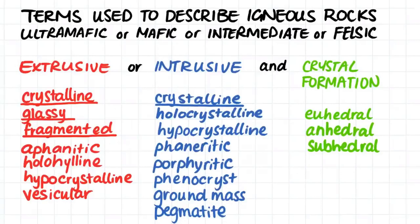In general, rocks can either be ultramafic, mafic, intermediate, or felsic, and then they can be classified as crystalline, glassy, or fragmented — which all depends on how the molten rock has cooled and solidified, whether it was an intrusive or extrusive igneous rock. If you haven't watched the videos on intrusive and extrusive volcanic activity, or the video that defines ultramafic, mafic, intermediate, and felsic magmas, I would suggest you go and watch those before continuing.